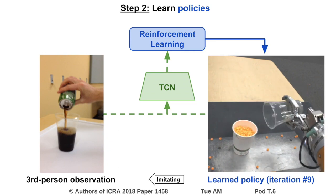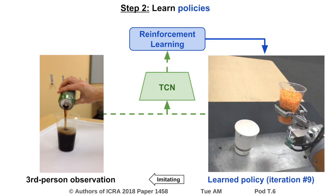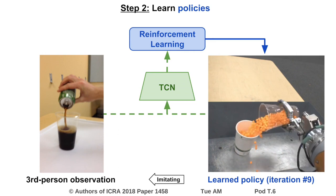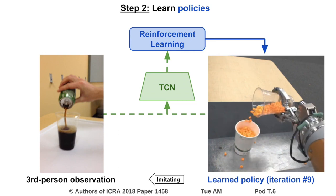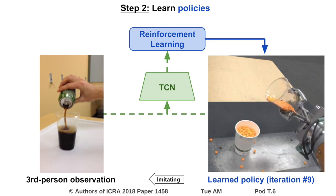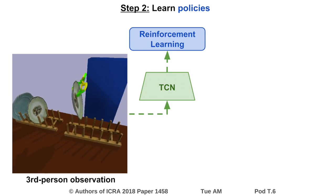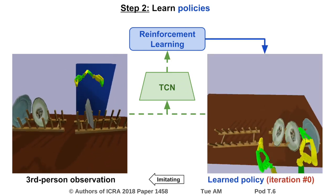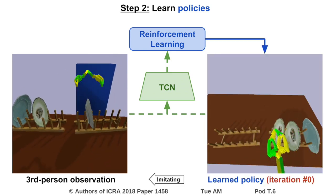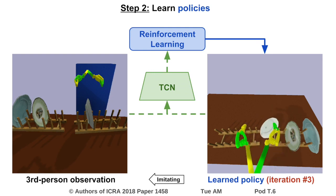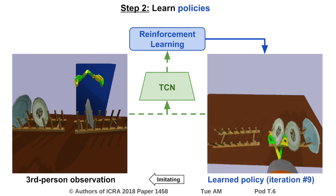The model converges after only 9 iterations, which is about 15 minutes of real-world training time. Similarly, in the dish moving task, the robot initially tries random motions, then learns to successfully pick up and move a plate — in particular, opening and closing the gripper at the appropriate time.